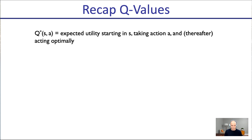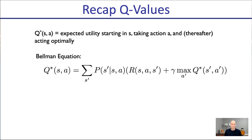Quick recap from the previous lecture: what are Q-values? Q-star(S,A) is the expected sum of discounted rewards the agent will accumulate when starting in state S, committing to action A in that state, and thereafter acting optimally. We had a Bellman equation to find those Q-values. Q-star(S,A) can be decomposed into a contribution from the immediate reward and the contribution of future rewards summarized in the Q-value at the next state.